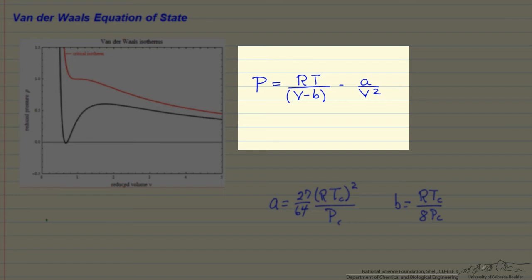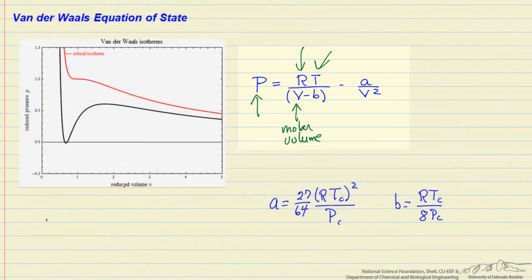So the van der Waals equation of state relates pressure, absolute temperature, R is the gas constant, and V is the molar volume, so this is volume per mole. A is a constant, indicated here, and B is also a constant, and they're related to the critical temperature and the critical pressure, which is unique for each gas.